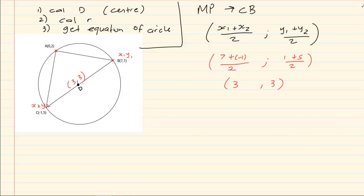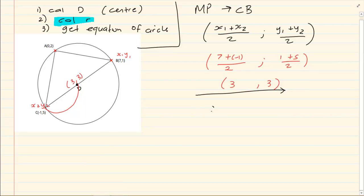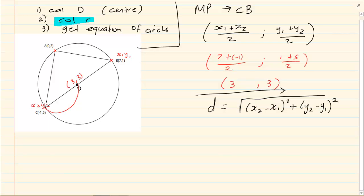Now how do we calculate the radius? The radius is simply the distance from the center to the circumference. So if I want r, I calculate the distance using the distance formula from grade 10 analytical geometry. If you are not familiar with this, you need to go and look at our videos on grade 10 analytical geometry.